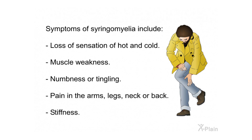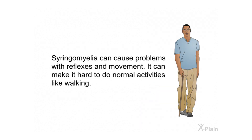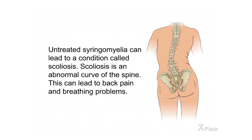Symptoms of syringomyelia include loss of sensation of hot and cold, muscle weakness, numbness or tingling, pain in the arms, legs, neck, or back, and stiffness. Syringomyelia can also cause problems with bowel control, numbness or pain in the face, and headaches. It can make it hard to do normal activities like walking.